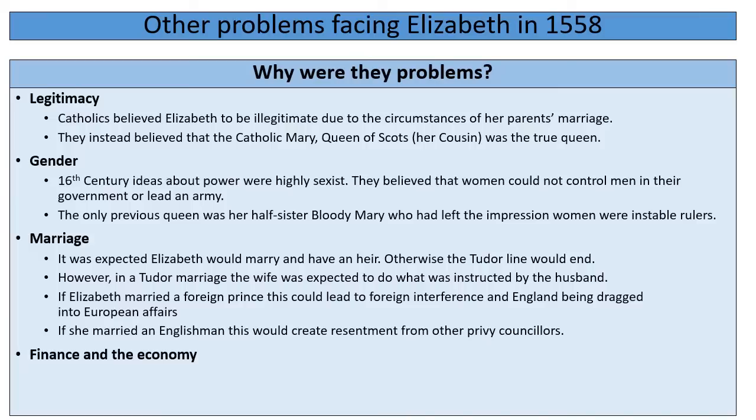Even if Elizabeth did want to marry, the choice of who to marry was problematic. If she married a foreign prince, this could lead to foreign interference and England being dragged into European affairs — as happened when Mary I married Philip of Spain and England got dragged into Spain's wars with France. If she married an Englishman, all other prominent nobles would resent the choice and the growth of power for her husband, potentially causing division. So whether she married or not, there would be tensions.